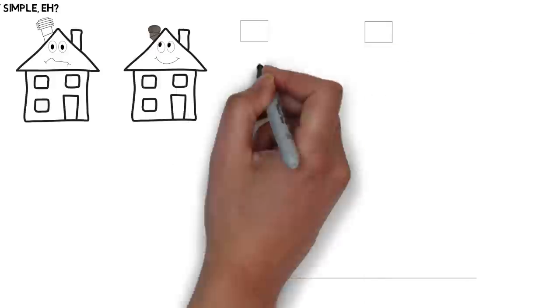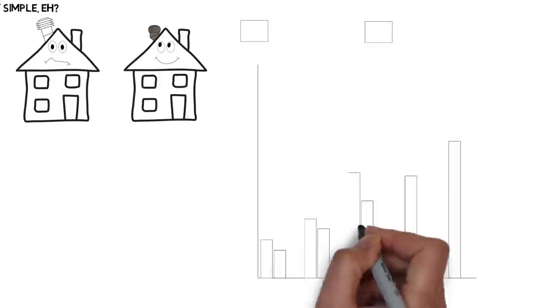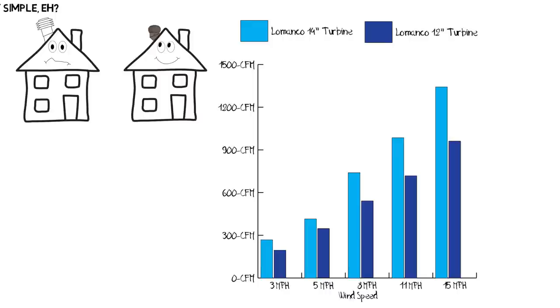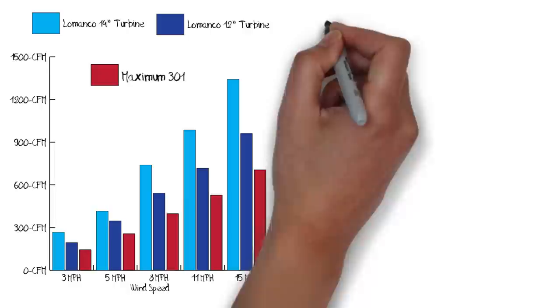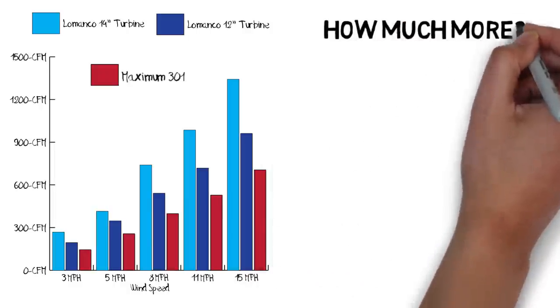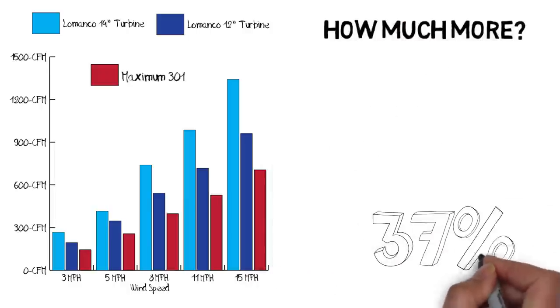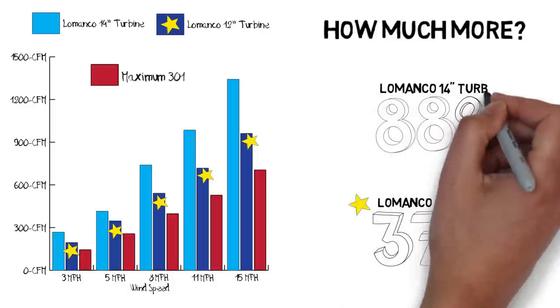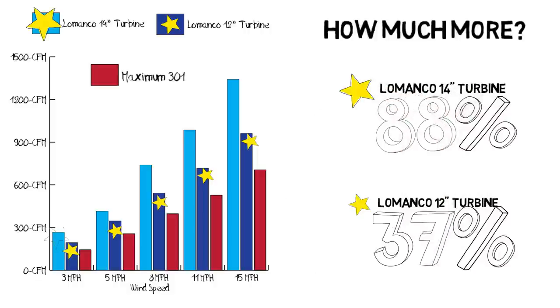Lamanco has tested both vents under the exact same controlled conditions. And as a matter of fact and record, the Lamanco Whorlybird exhausts more air than the Maximum 301 at all wind speeds. The 12-inch Whorlybird has 37% more airflow. And the 14-inch has 88% more airflow.